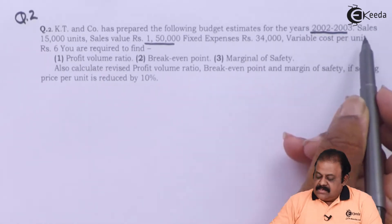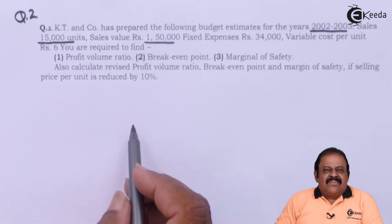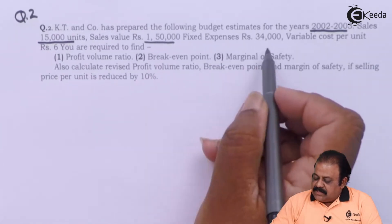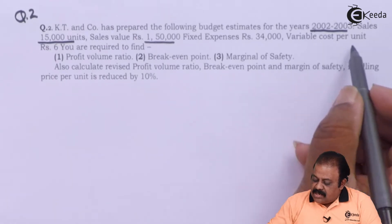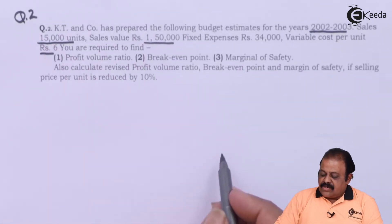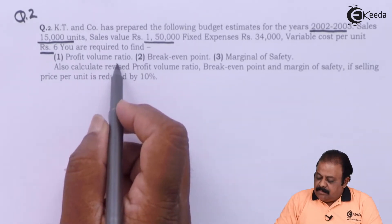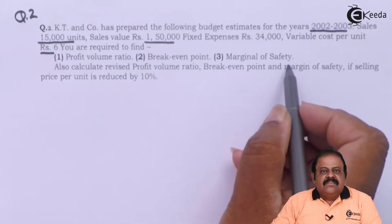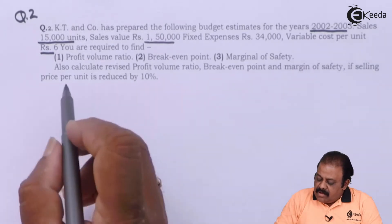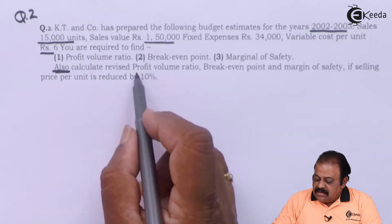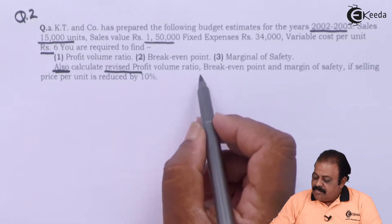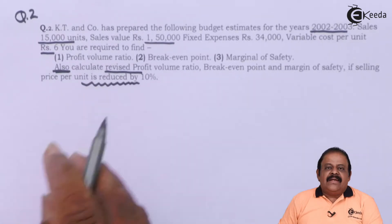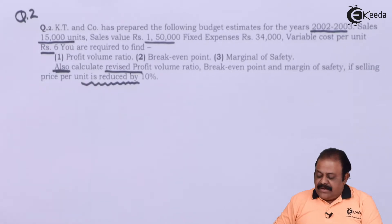Sales: 15,000 units; sales value: ₹1,50,000; fixed expenses: ₹34,000; variable cost per unit: ₹6. We are required to find out the profit volume ratio (PV ratio), break-even point, and margin of safety for the current year. We also need to calculate the revised PV ratio, break-even point, and margin of safety if the selling price per unit is reduced by 10%.